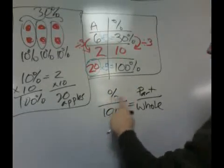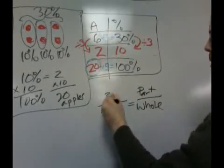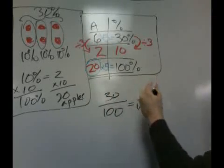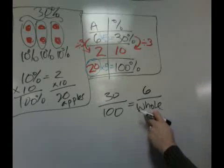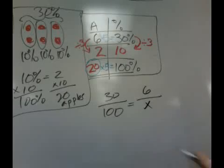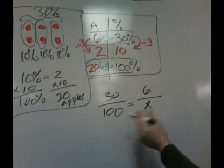we know the percent. It's 30, and we know the part. It's six apples. That's the part. What we don't know is the number of apples in the whole barrel, so I'm going to put that as our X, and now it's time to figure out the value of X.